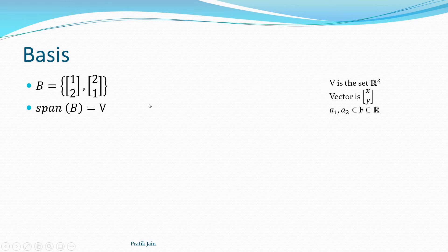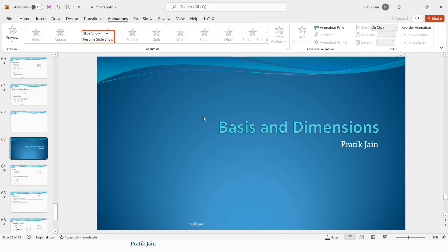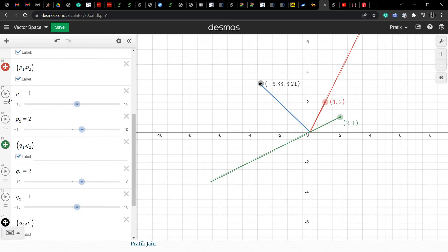The span of B is equal to the whole vector space V. If you remember, span is all possible linear combinations of B. So if you do any possible linear combination of B and put all of that into a set, you get V — your whole vector space R². Let me visually show that. Here I have put the vector (1,2) as the first vector and (2,1) as the other vector.